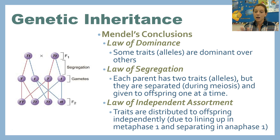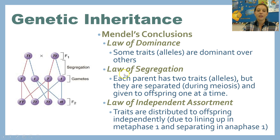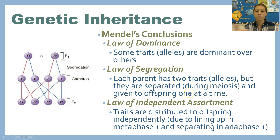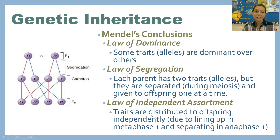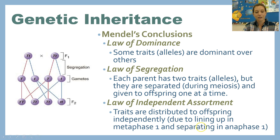From his work, Mendel concluded three things — keep in mind he didn't know about DNA or alleles, but he was still able to conclude that they existed. He concluded the law of dominance: some alleles are dominant over others. He concluded the law of segregation: during meiosis, alleles are separated from one another and given to offspring one at a time. He also concluded the law of independent assortment: traits are distributed to offspring independently of one another — flower color doesn't depend on flower height. We now know this is due to how chromosomes line up in metaphase I and separate in anaphase I of meiosis.